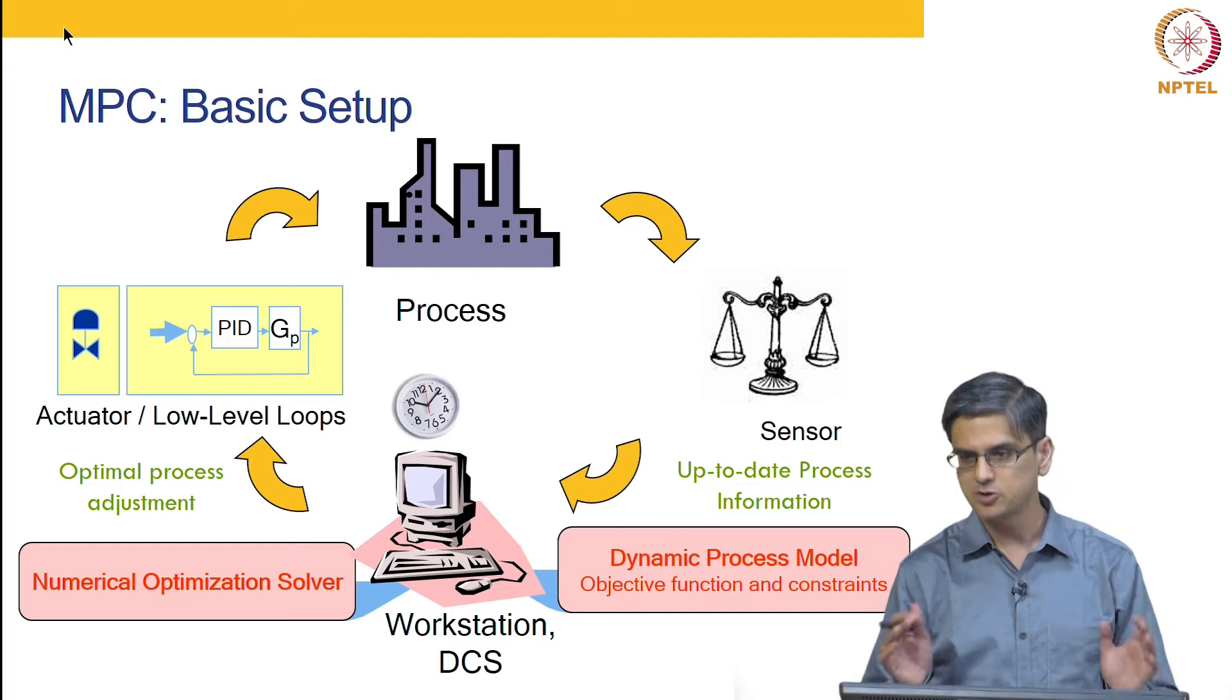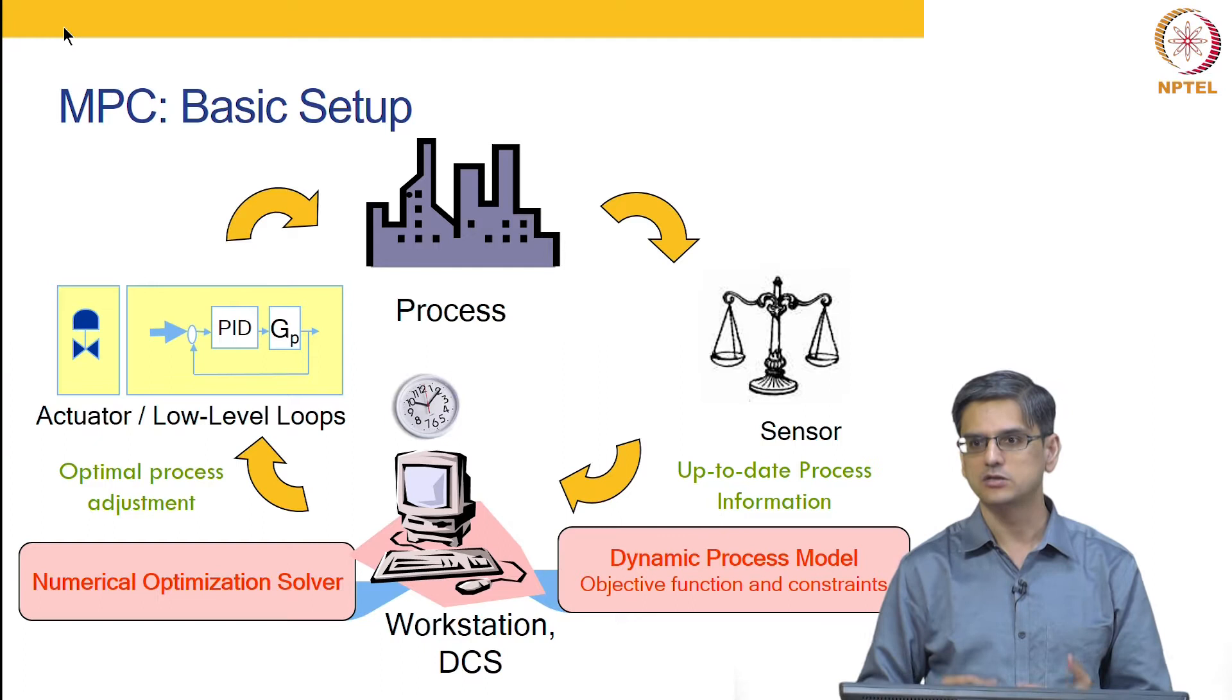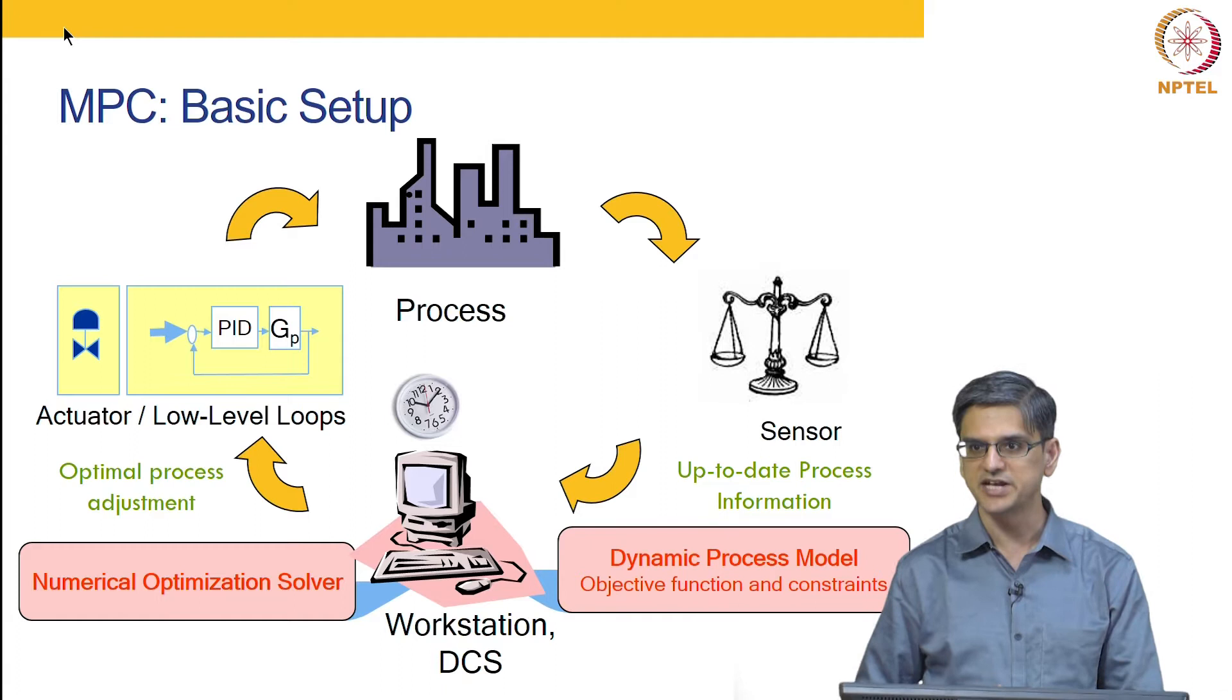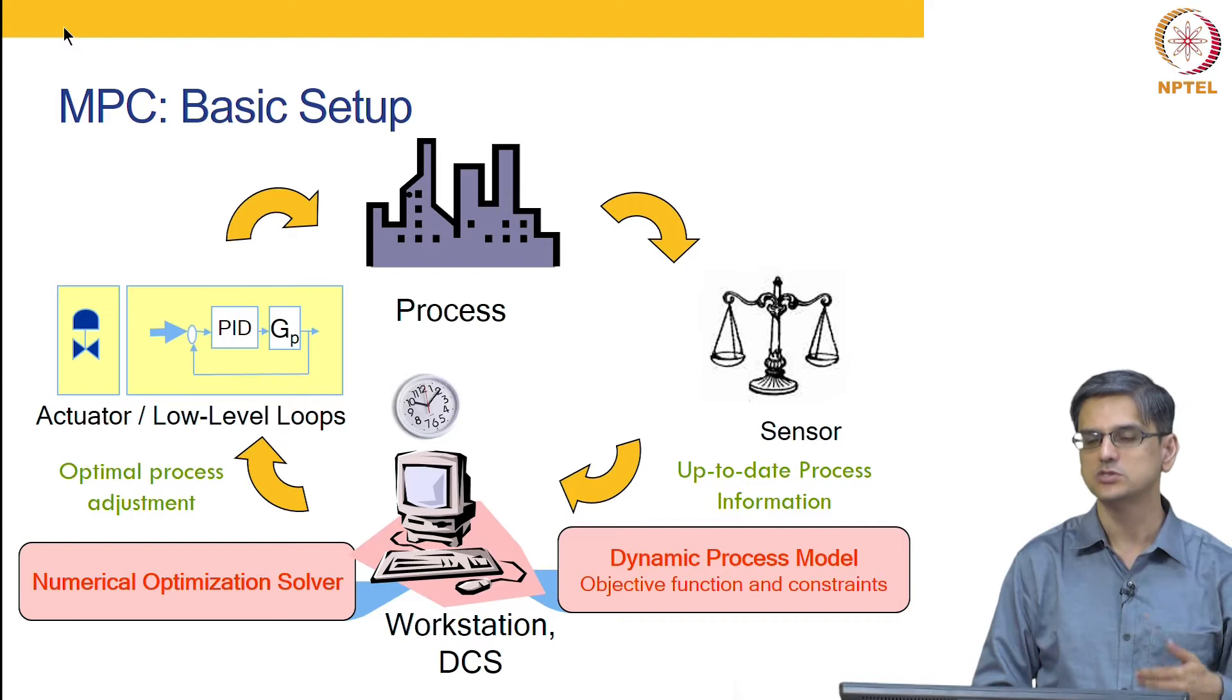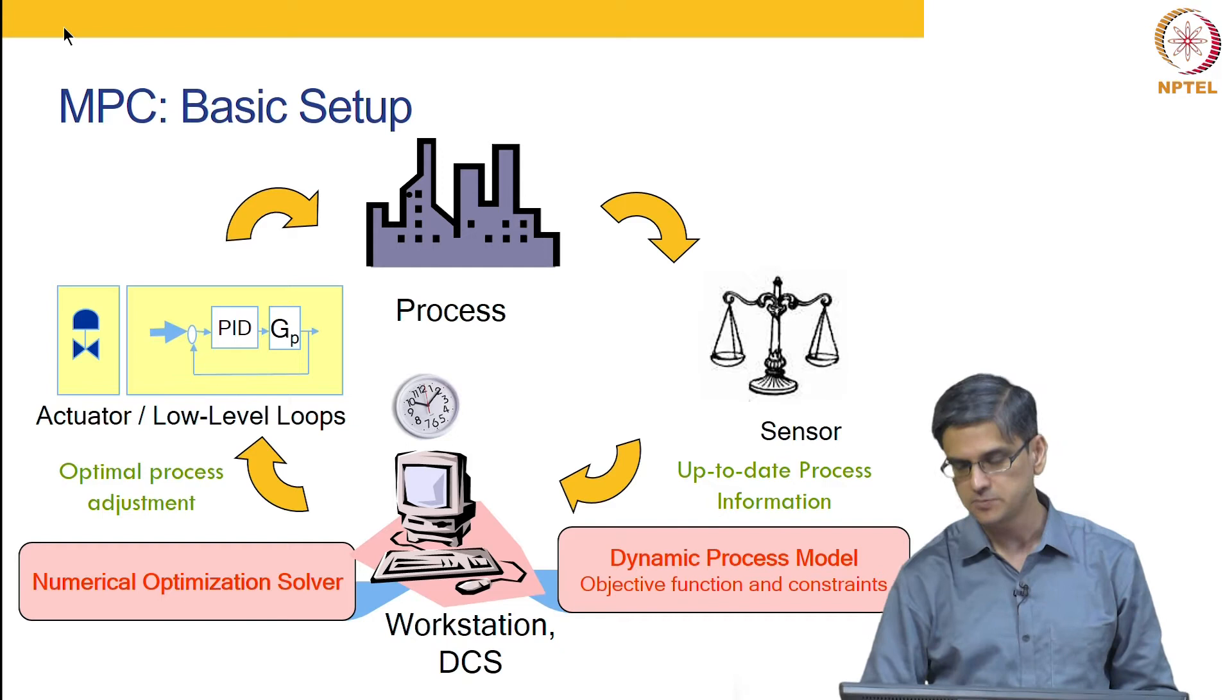So MPC basic setup: you have a process, you have your measurement devices, you have a model. The model and measurements are used to compute the state information by an observer. The state information is used by MPC in order to predict the future. An optimizer chooses the best set of input moves. The current input move is implemented and you repeat that at each time step in a receding horizon model.